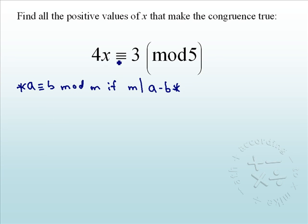So for 4x to be congruent to 3 mod 5, that means we have to consider 4x minus 3, because our a is 4x and our b is 3. And since it's mod 5, the only numbers that we need for x are 0 through 4.